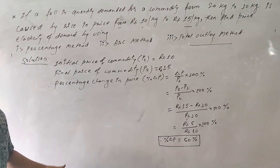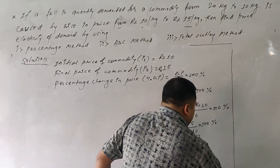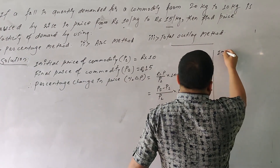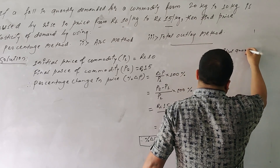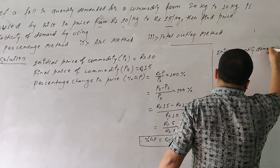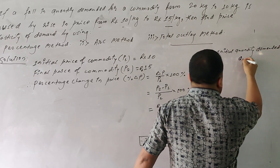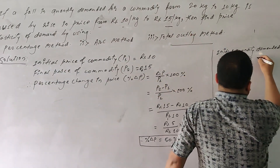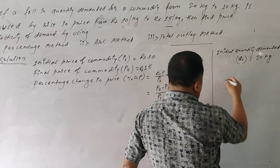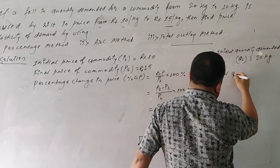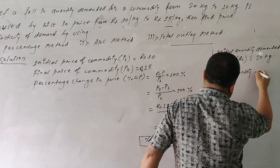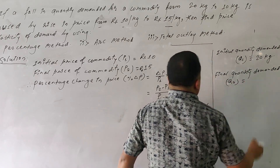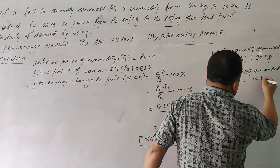Now for percentage change in quantity demanded: the initial quantity demanded Q1 is the first quantity demanded, which is 20 kg. And the final quantity demanded Q2 is 10 kg.